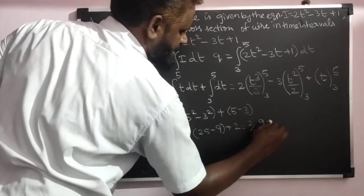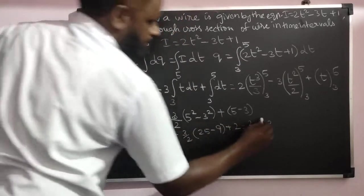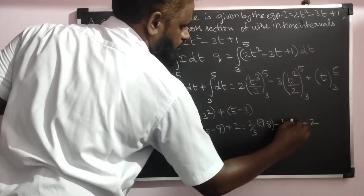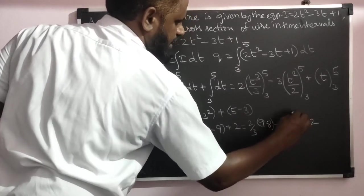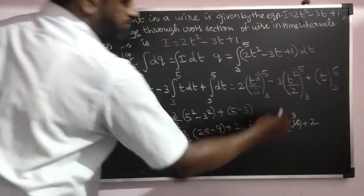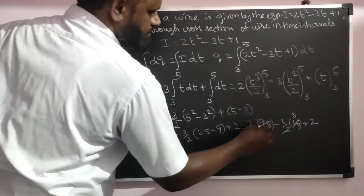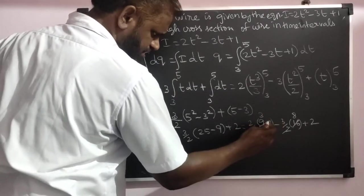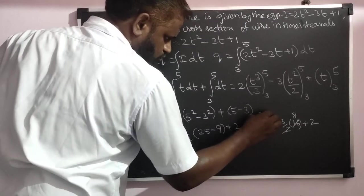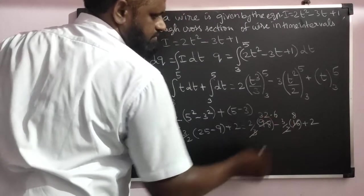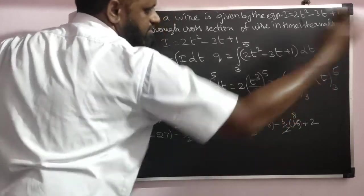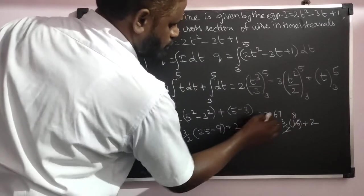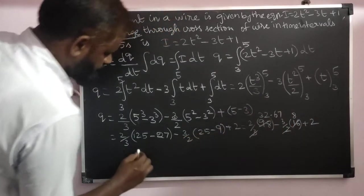So 2/3 × 98 - 3/2 × 16 + 2. This simplifies through calculation to get the numerical values.